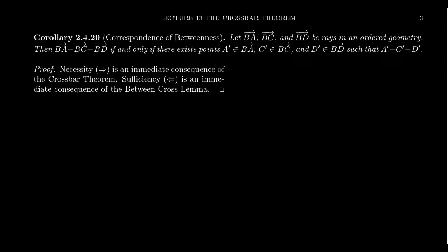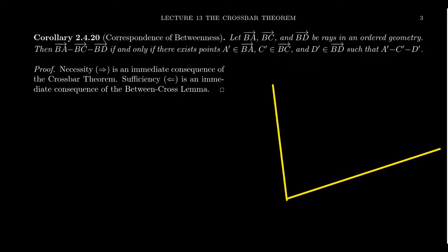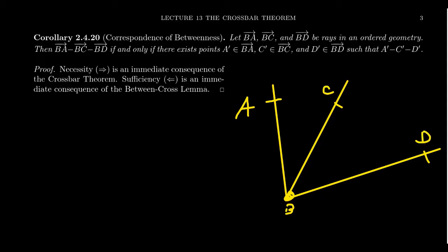It's a really short proof. It follows basically from the crossbar theorem and the between-cross lemma, which we can think of as almost converses of each other. So let's assume we have some type of betweenness of rays. We have a common vertex B, and then we have rays given by A, C, and D. So BC sits between BA and BD.